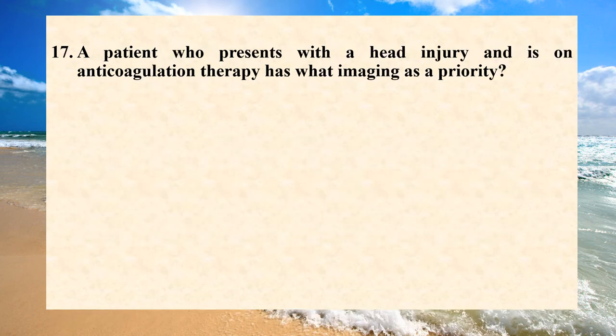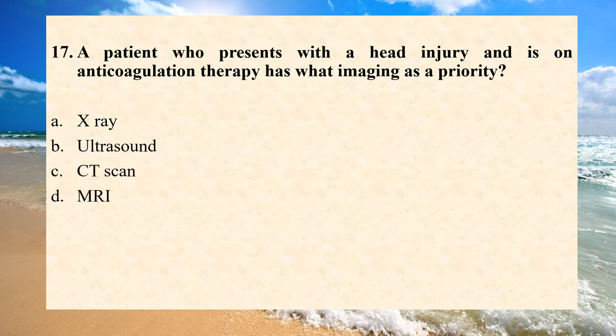A patient who presents with a head injury and is on anticoagulation therapy has what imaging as a priority? A. X-ray. B. Ultrasound. C. CT scan. D. MRI. Answer is D. MRI. Persons taking anticoagulation therapy are at increased risk of bleeding after a head injury. MRI gives a clear picture of traumatic brain injury, showing where damage and bleeding occur in the brain.